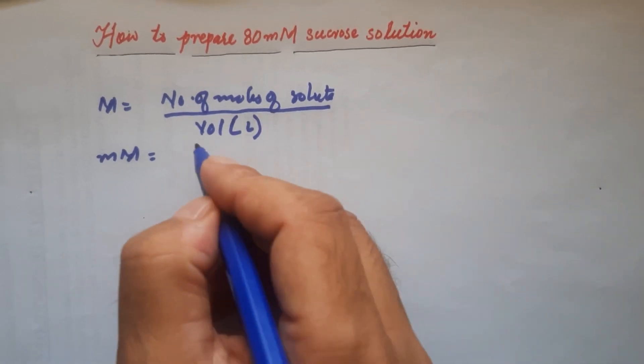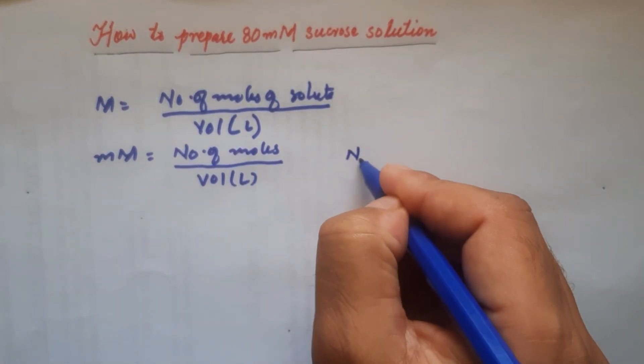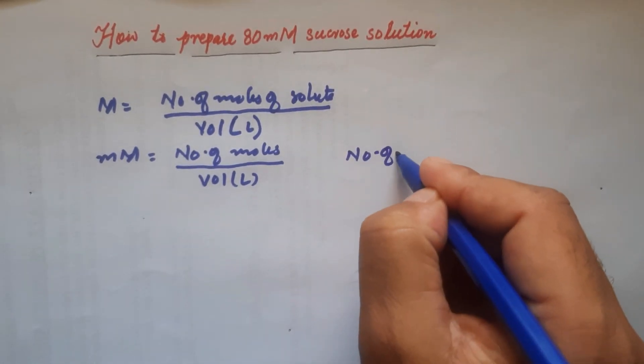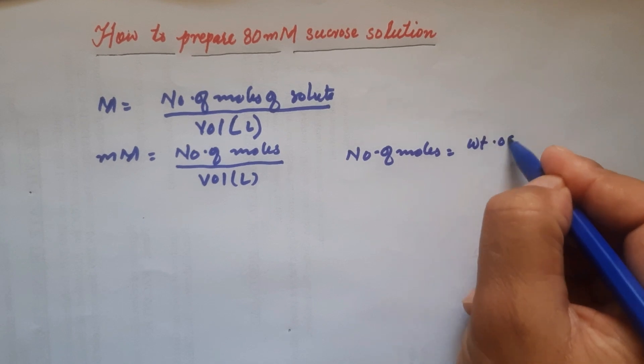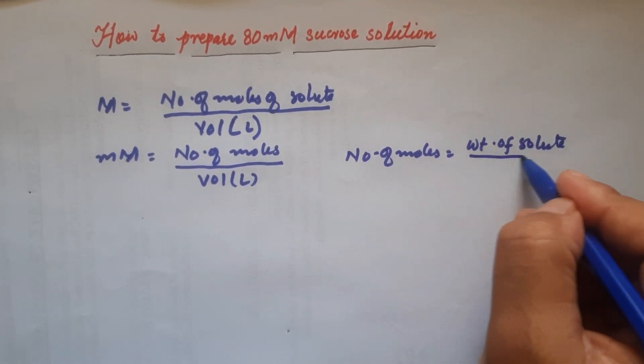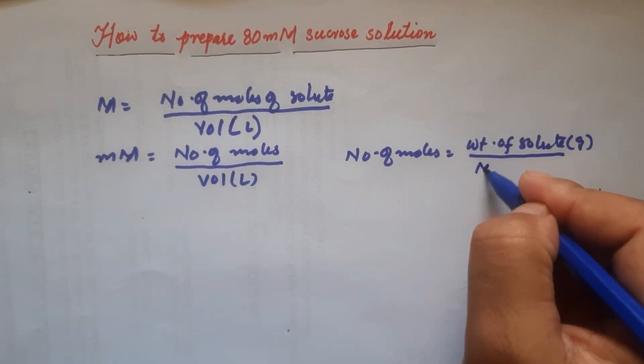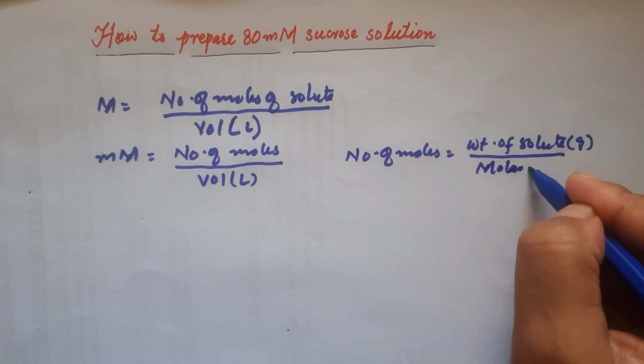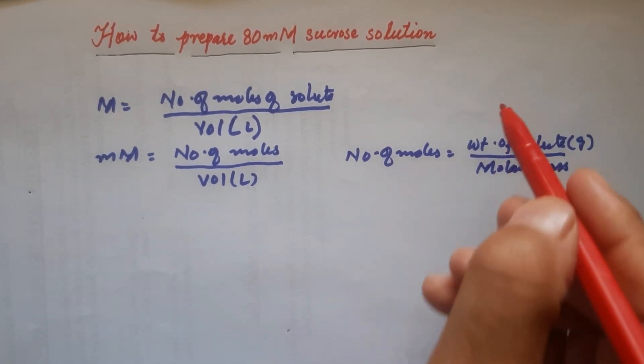You can write number of moles of solute, which can also be written like this: number of moles equals weight of solute (this must be in grams) divided by molar mass of the solute.